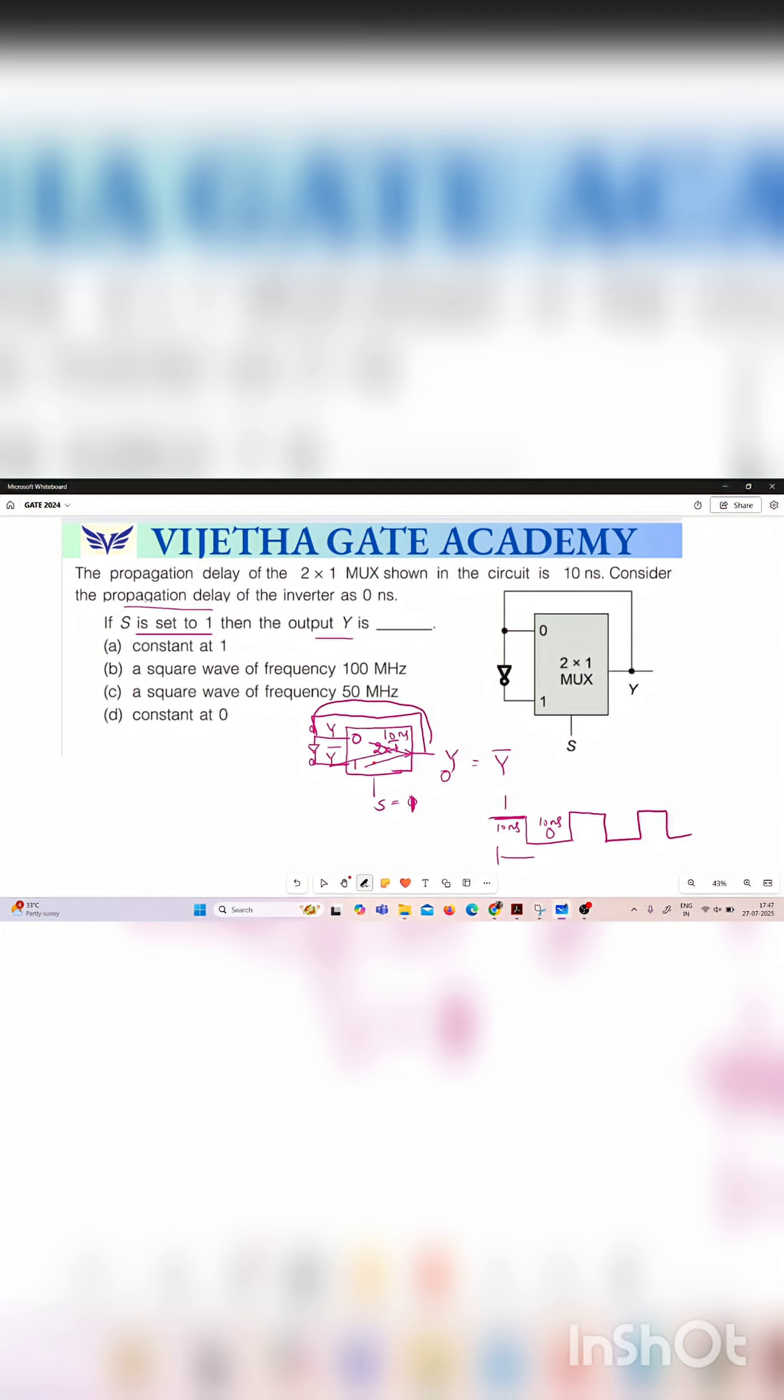So the time period of the generated square wave is equal to 20 nanoseconds. And if you calculate the frequency f is equal to 1 by 20 nanoseconds which is 50 megahertz.